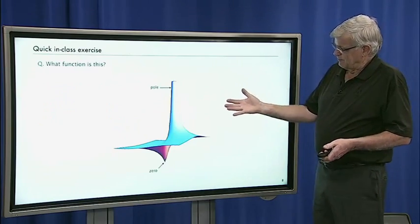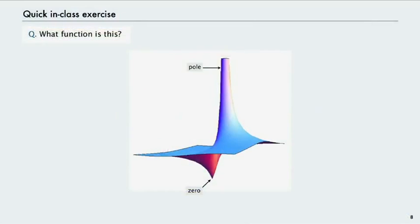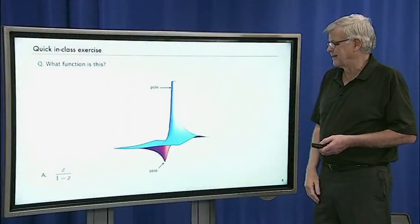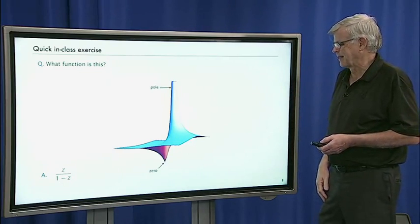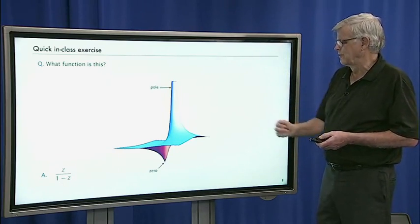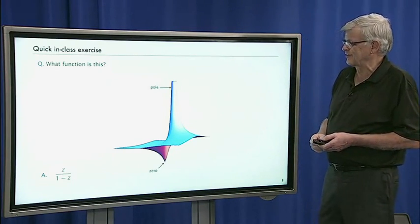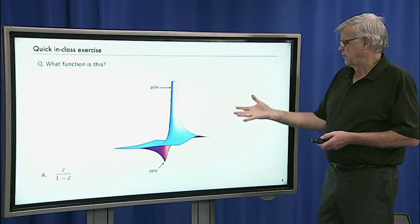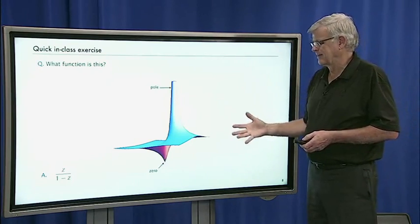Here's a quick exercise: what function is this? It's a function that has one zero and one pole. It's the really easy function z/(1 − z), with a pole at 1 and a zero at 0. The rest of the surface integrates those together. Think about the 2D analog if you want to understand what the cross-section is like. We'll see variations on this kind of surface for all different types of functions.